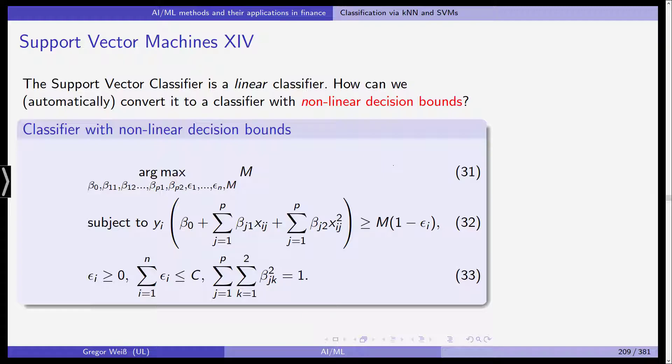Well, the support vector classifier is a linear one. So, how can we automatically convert it to a classifier with non-linear decision bounds?